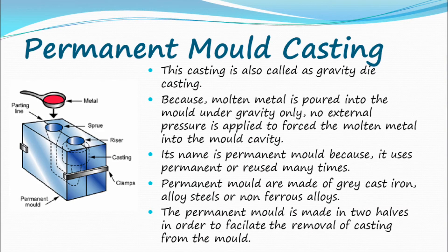Permanent mold casting: this casting is also called gravity die casting, because molten metal is poured into the mold under gravity only — no external pressure is applied to force the molten metal into the mold cavity. It is named permanent mold because it is permanent and can be reused many times. Permanent molds are made of gray cast iron, alloy steels, or non-ferrous alloys. The permanent mold is made in two halves in order to facilitate the removal of casting from the mold.